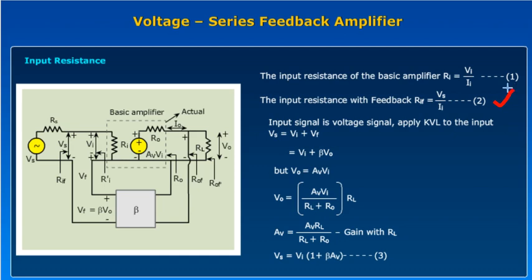Without feedback, RI is equal to VI by II. The input signal is the voltage signal. Applying KVL to the input, the signal source Vs is equal to VI plus Vf. We already know that Vf is equal to beta V0. So the total signal source Vs is equal to VI plus beta V0. We know that V0 is equal to AV into VI, so V0 is equal to AV·VI by (RL plus R0) into RL.